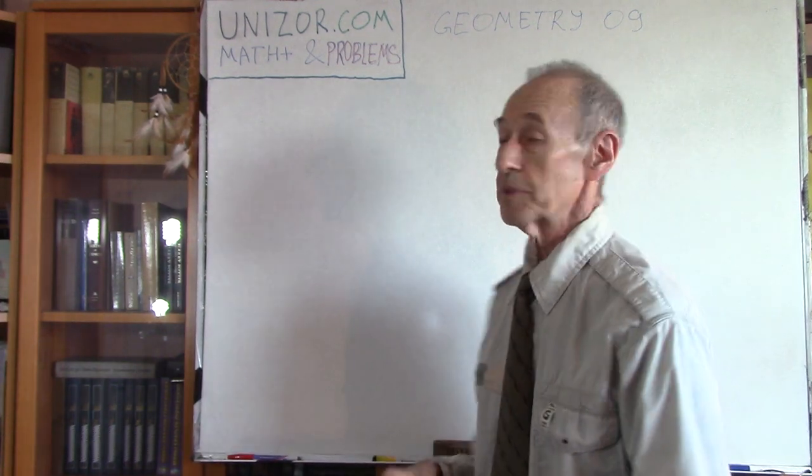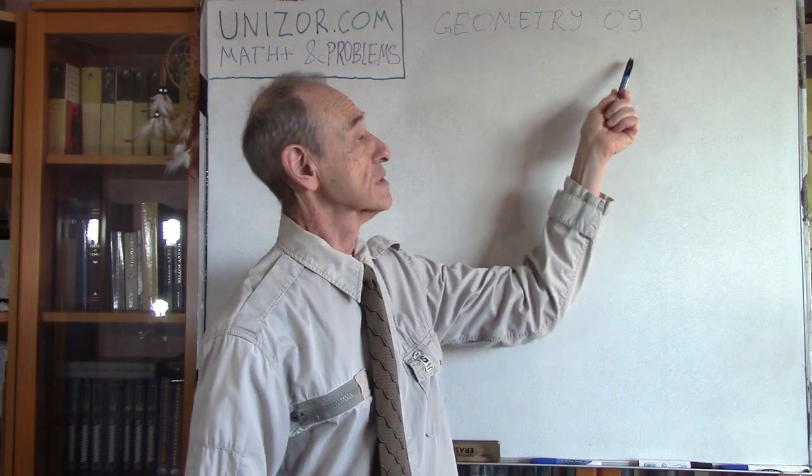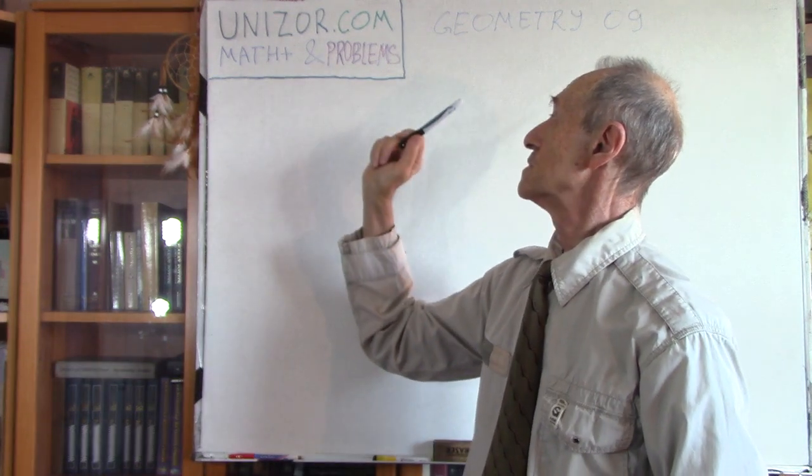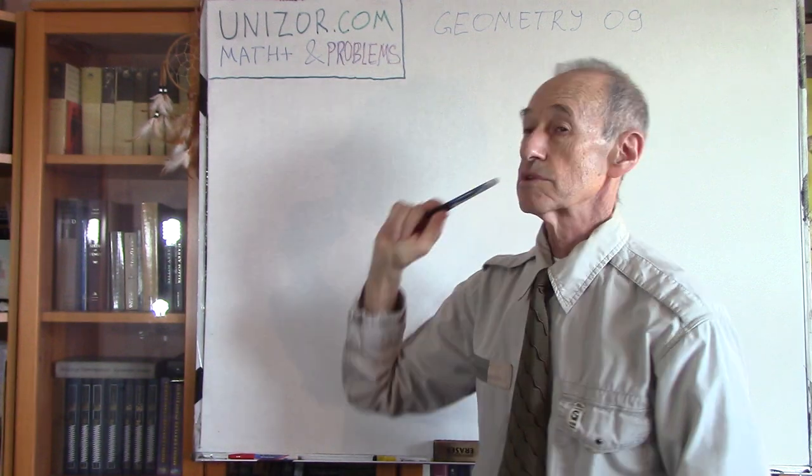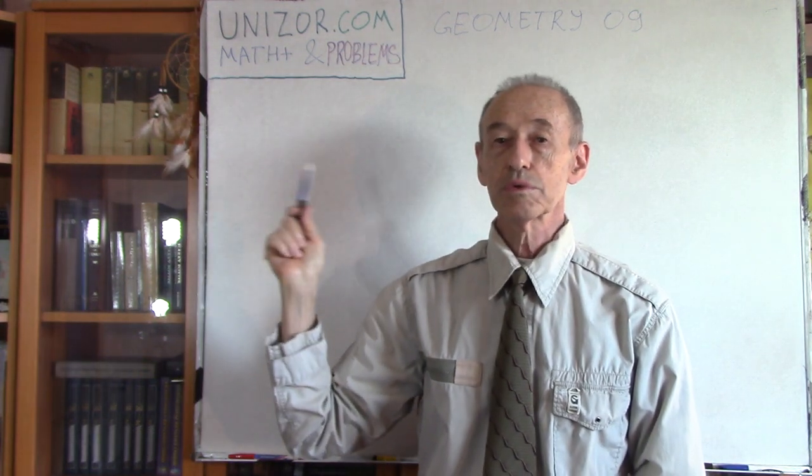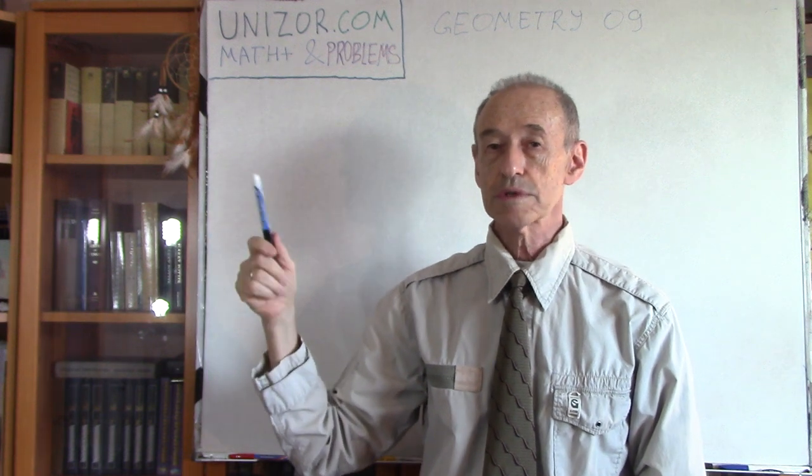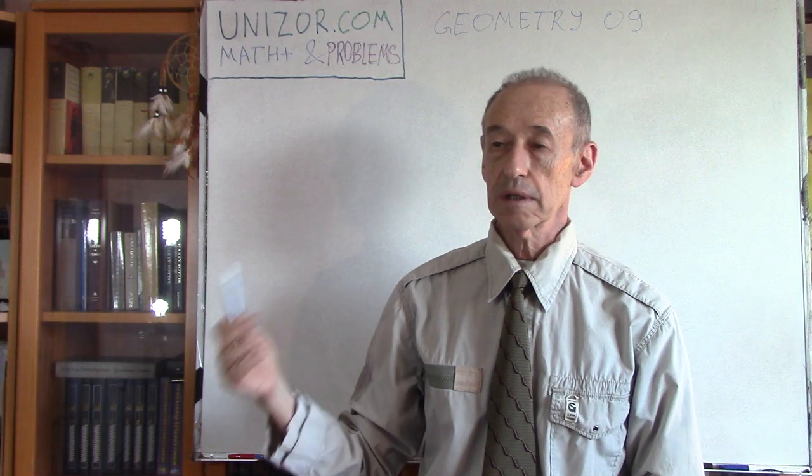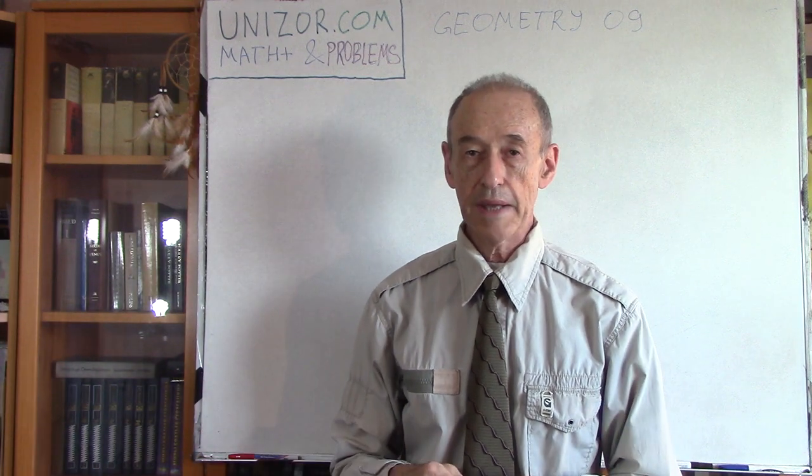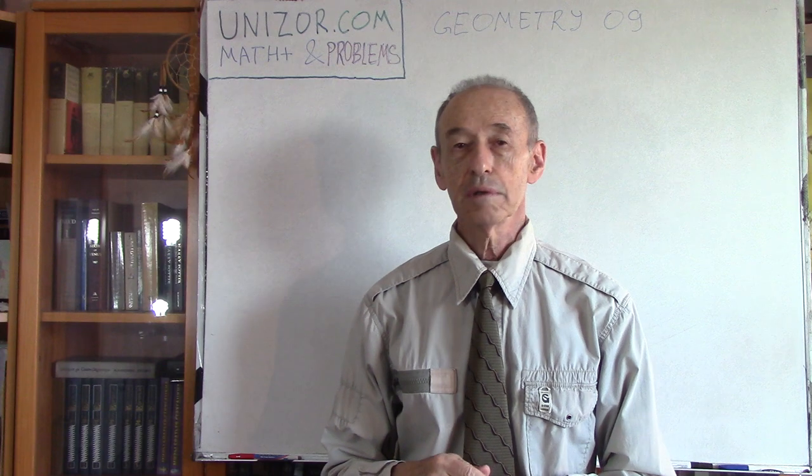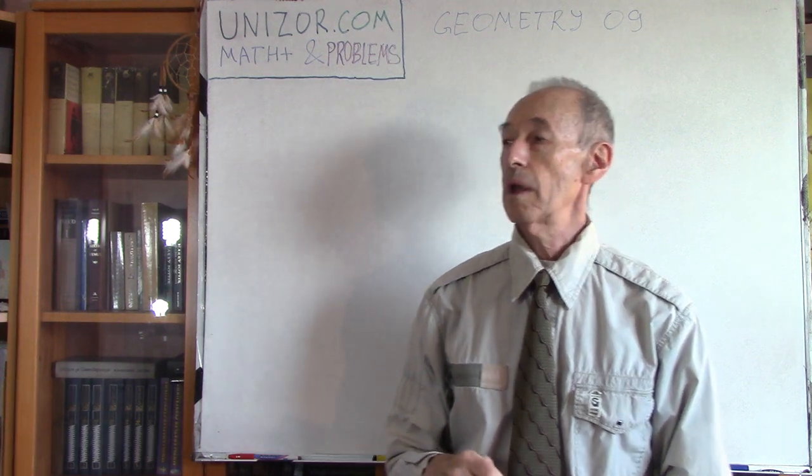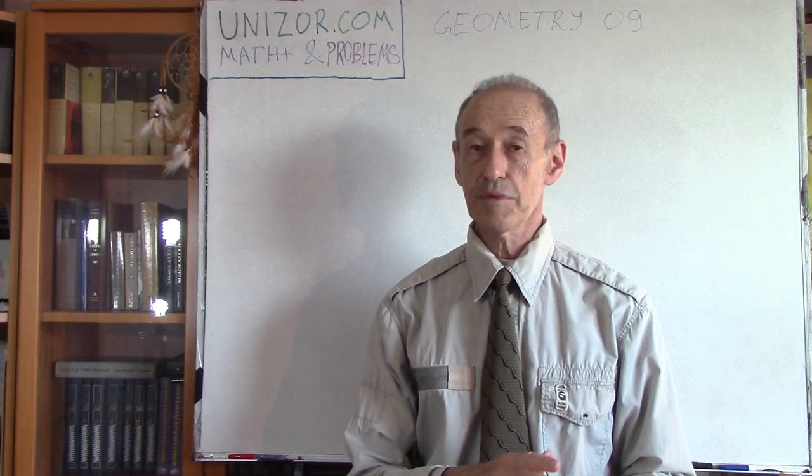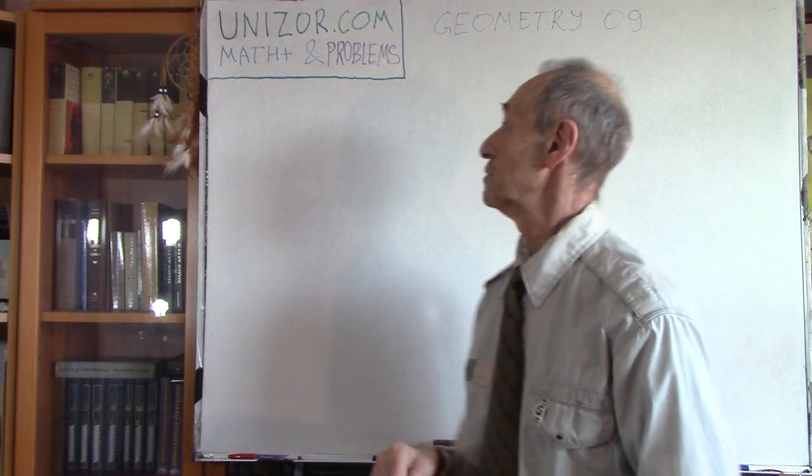In this particular case, I would like to talk about a couple of problems which involve only the straight ruler. Today will be a lesson called Geometry 09, part of Maths Class and Problems course presented on Unizor.com. On Unizor.com you also can find a prerequisite course called Maths for Teens, basically a classical course of mathematics for primarily high school students.